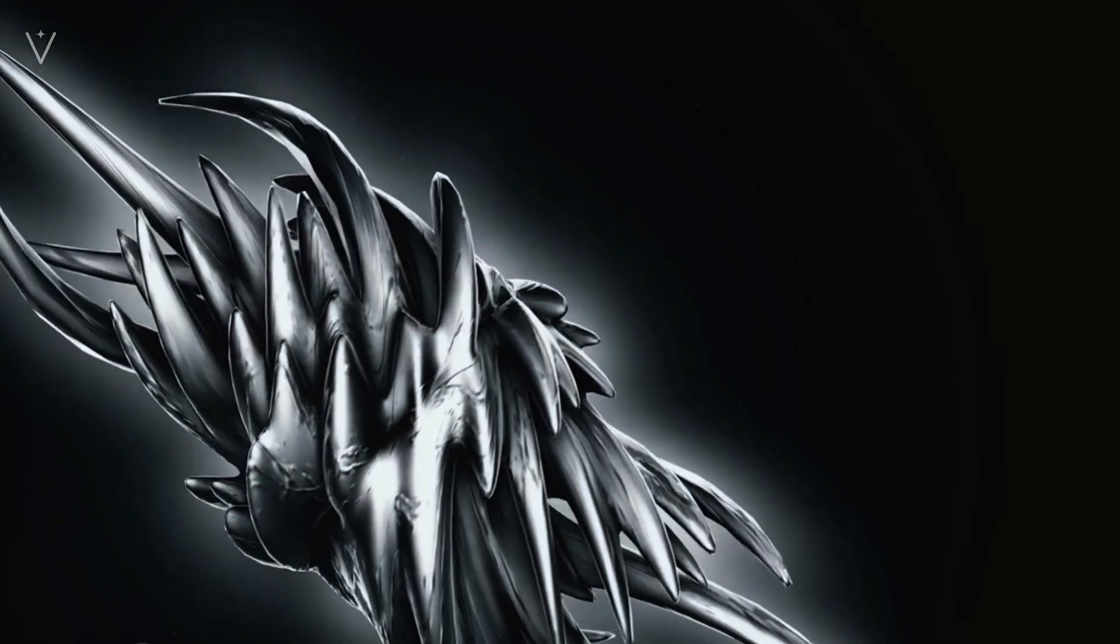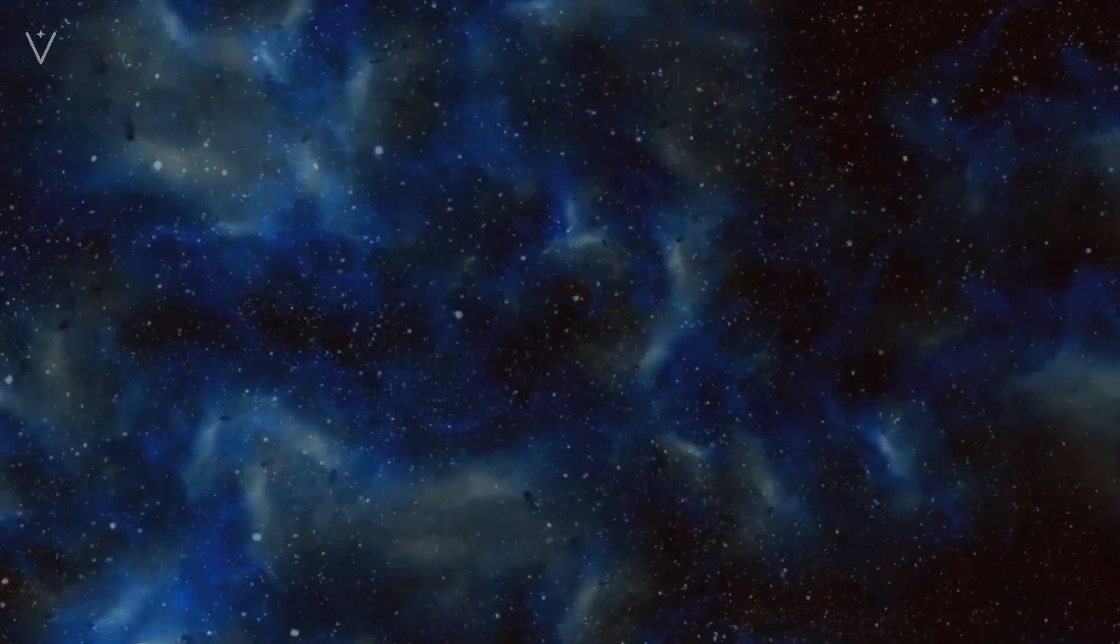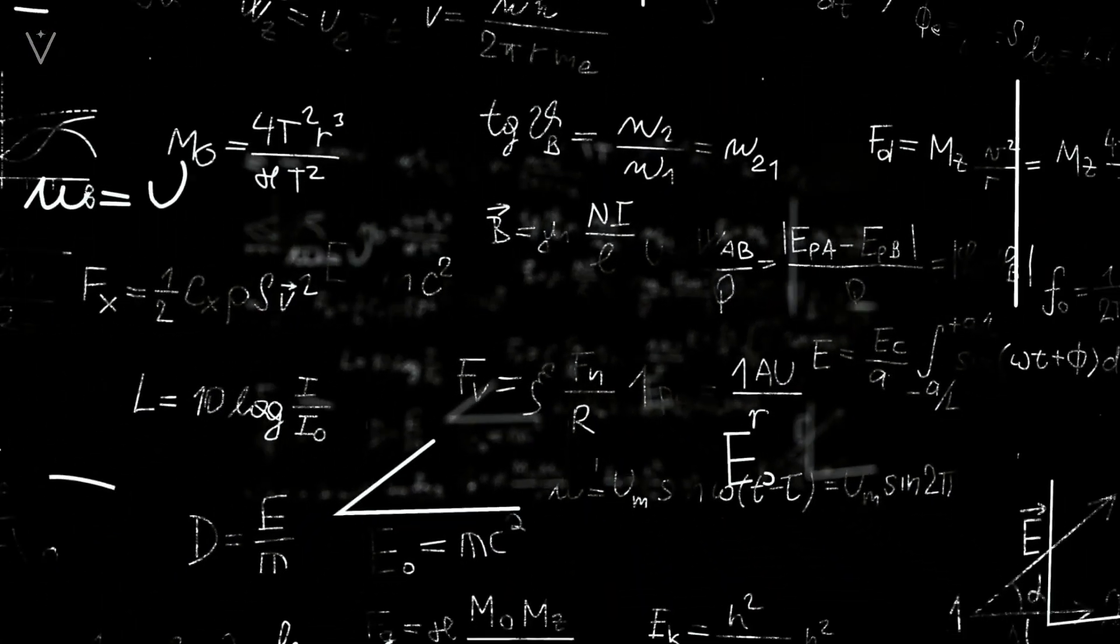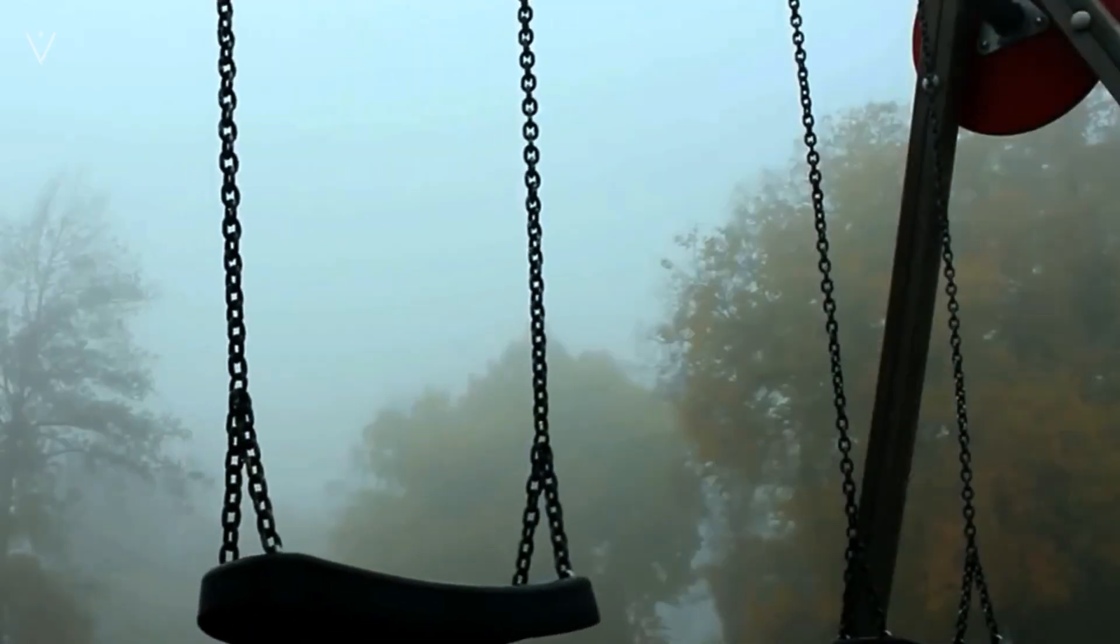The universe is filled with things we can't see, things that don't emit light. We call them dark matter and dark energy. Don't let the names fool you. They're not evil or scary, they're just mysterious. We know they exist because of the way they affect the things we can see.